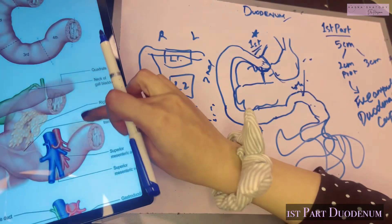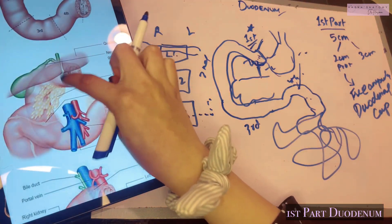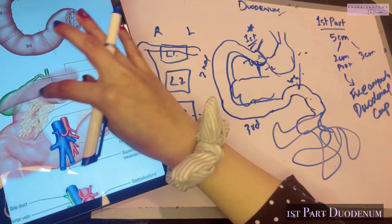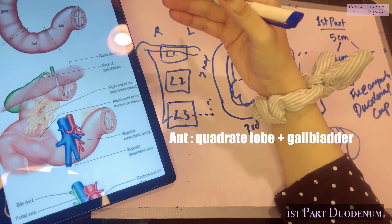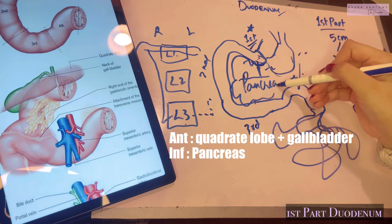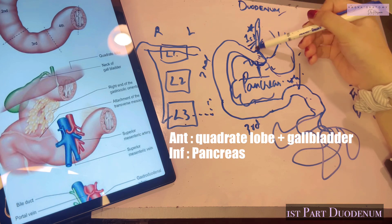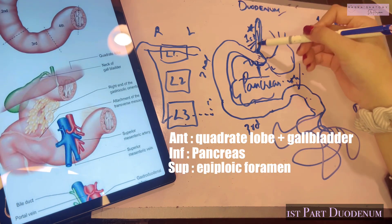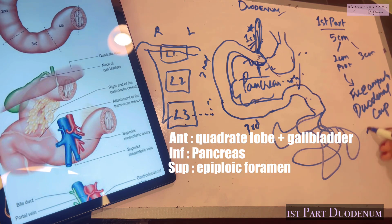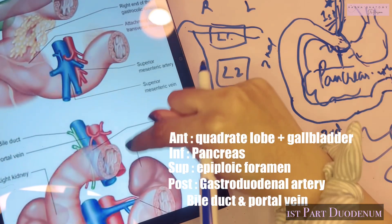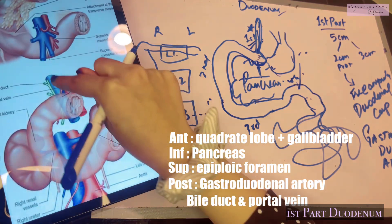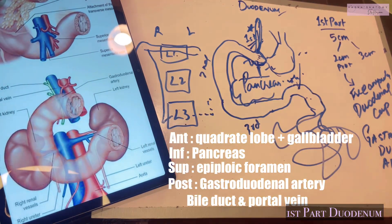The relations of the first part of the duodenum are quite straightforward. Anteriorly lies the liver — more specifically the quadrate lobe of the liver — along with the gallbladder. Inferiorly lies the head of the pancreas. Superiorly, if you recall, the right free margin of the lesser omentum forms the epiploic foramen, so the epiploic foramen lies superior to the first part. Posteriorly lies the gastroduodenal artery, coming from the proper hepatic artery off the celiac trunk, along with the bile duct and the portal vein.